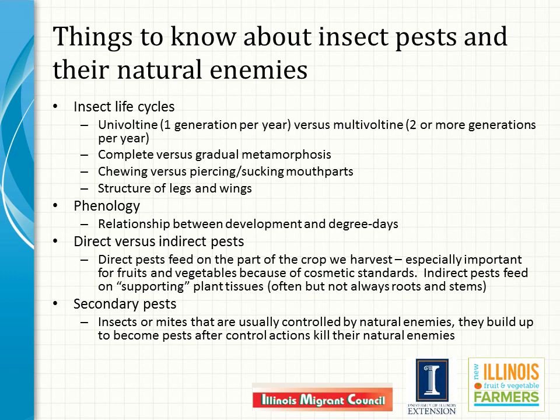Insects develop faster at warmer temperatures, so the timing of their occurrence is sometimes predicted using phenology models and degree days. They may be direct or indirect pests. Direct pests feed on parts of the crops that we intend to harvest — for example the fruits of apples and tomatoes. Indirect pests feed on supporting parts, often roots, stems, and leaves, though in some cases these parts are what we harvest — think of beets, carrots, and spinach. And some pest populations explode in numbers after insecticides are used to control other pests that kill the natural enemies of the new pest as well. These are called secondary pests, and aphids and mites often fall into this category.